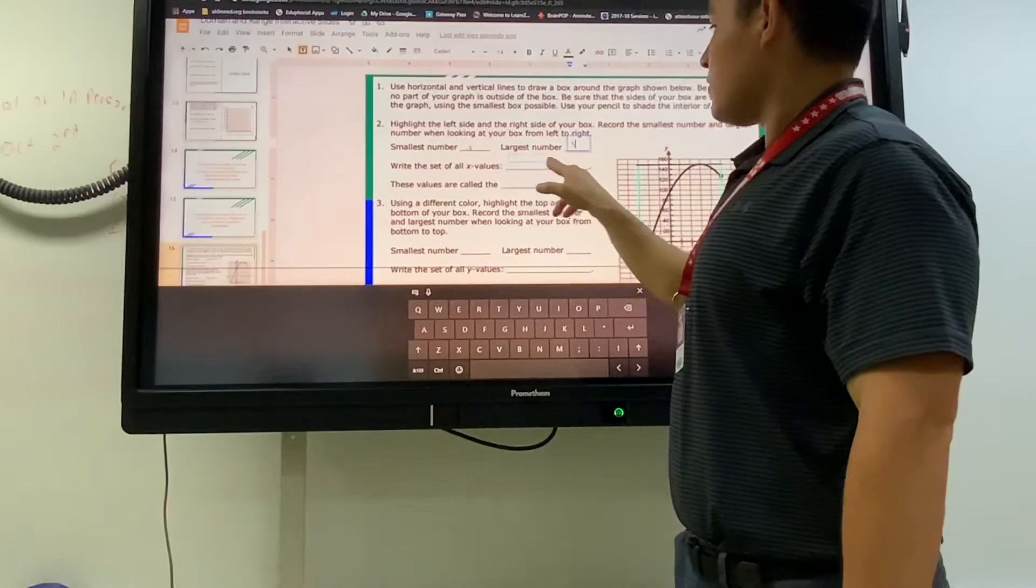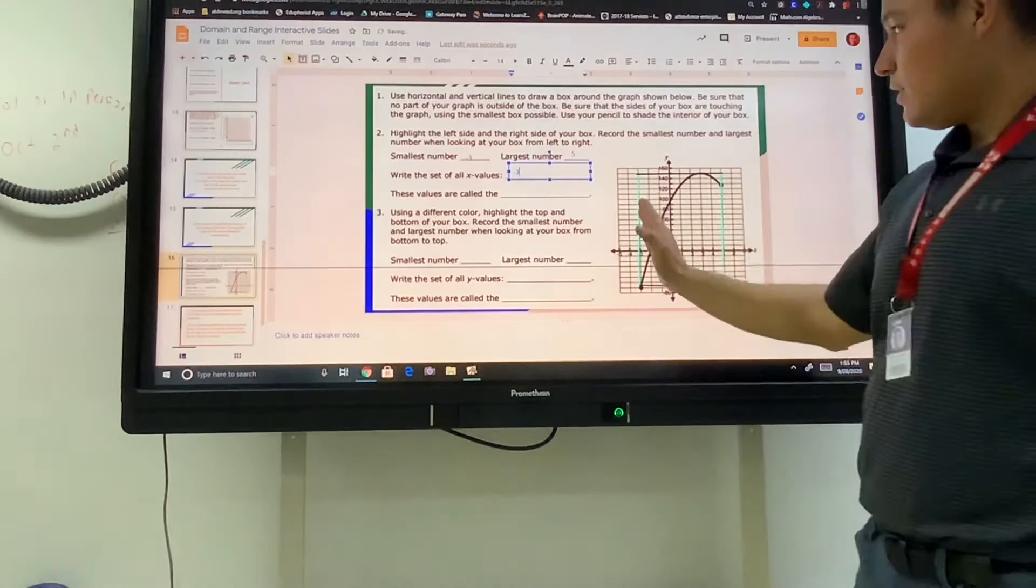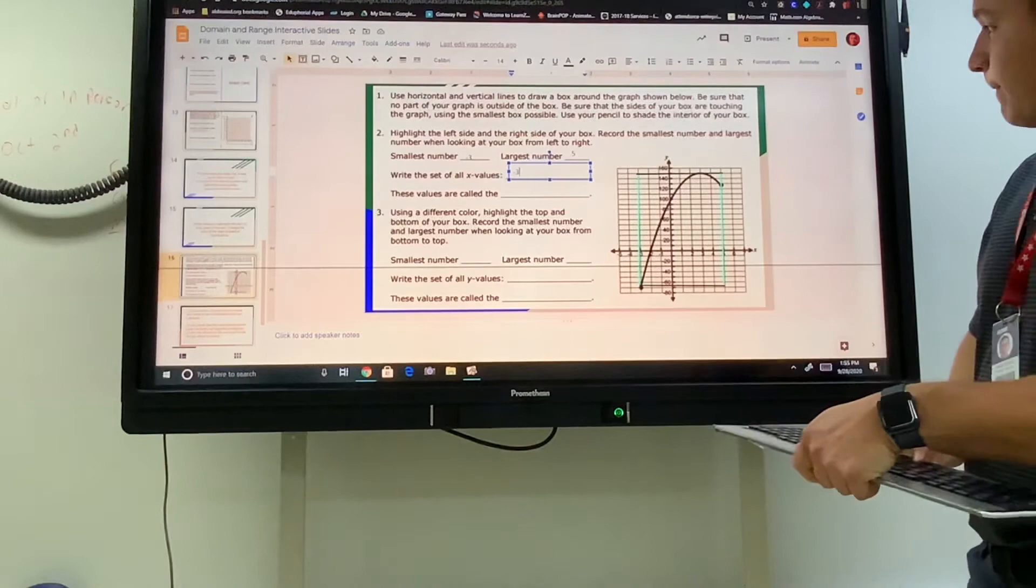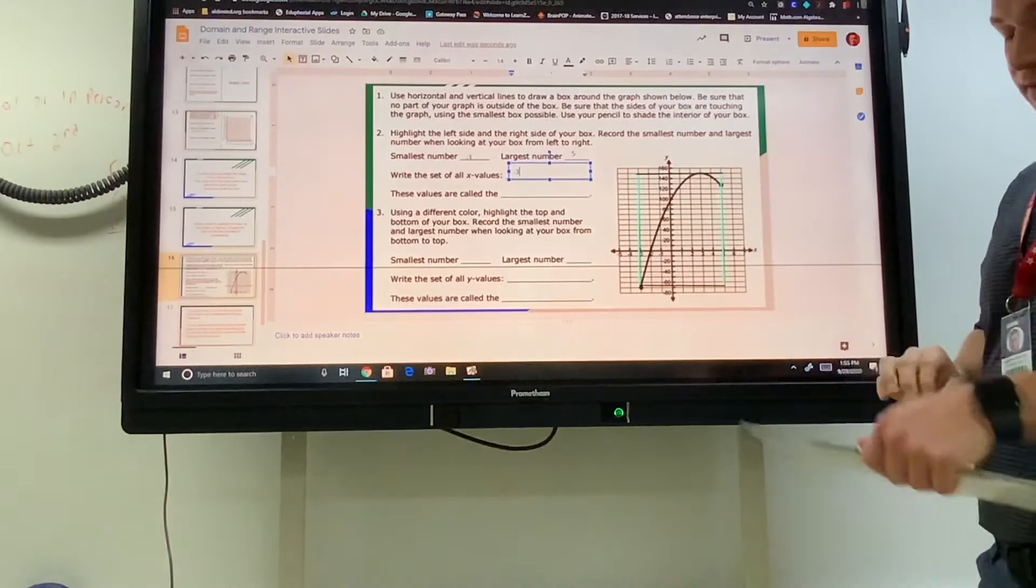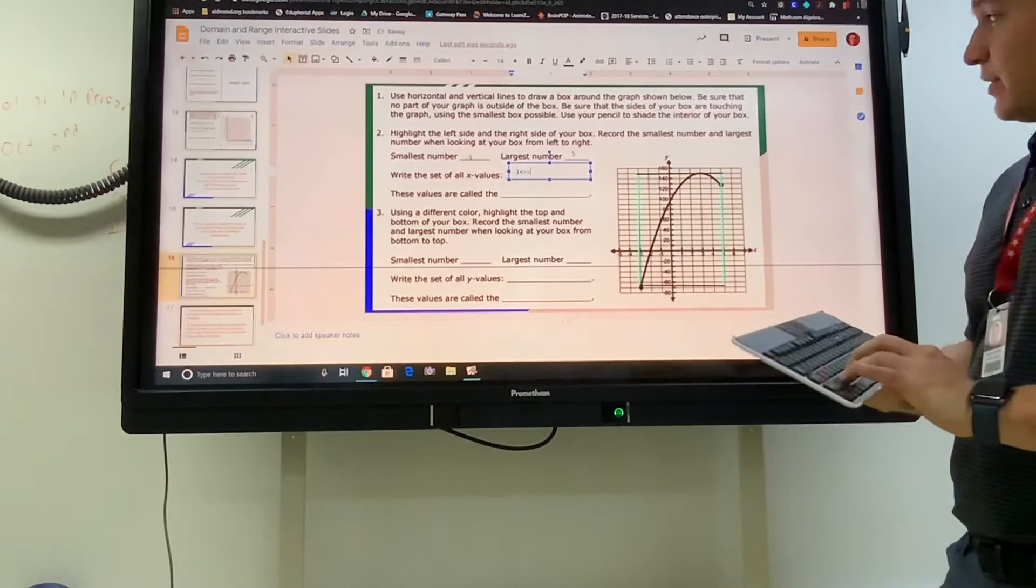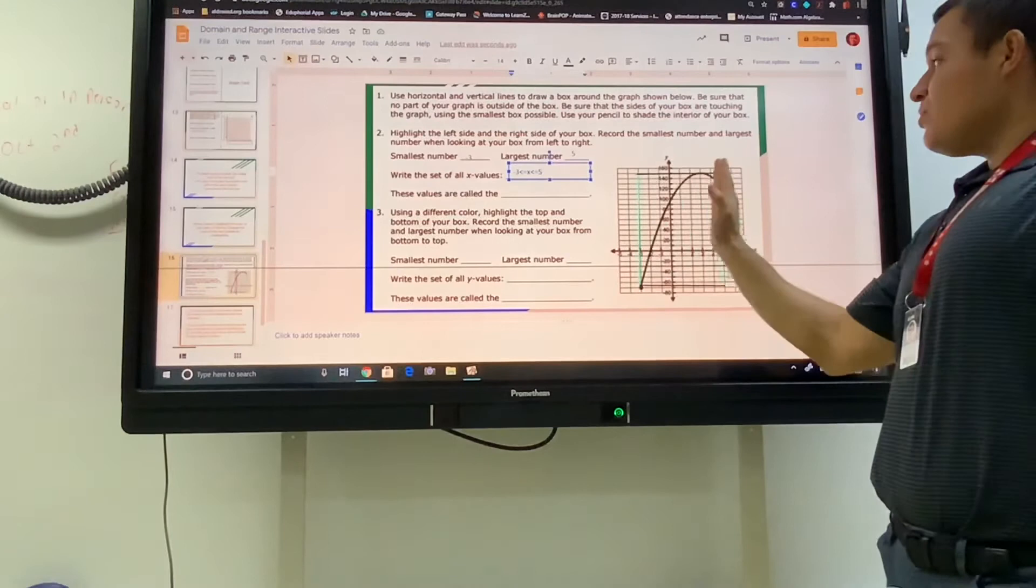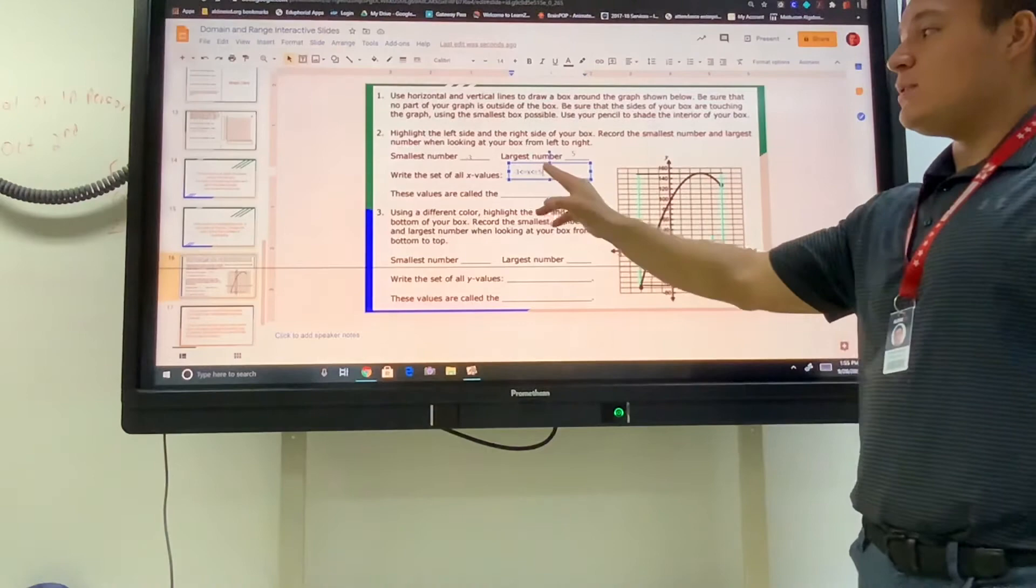Then we're going to write all of the x values. Well, the smallest was negative 3, so we're going to write all of the x values. And then look at this graph. This graph has a continuous line from left to right. Because it's continuous, and because this dot is a full circle dot, it's not an open circle, it's a full circle, we're going to put less than or equal to. These are x's, and we are less than or equal to 5. The boundaries for the x's were from negative 3, any number in between including the decimals up until 5. X needs to be in between those two. This is called the domain.